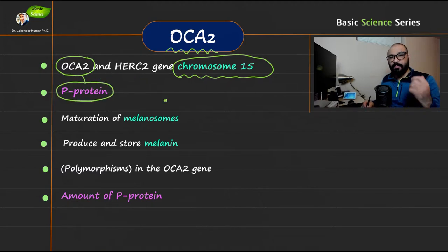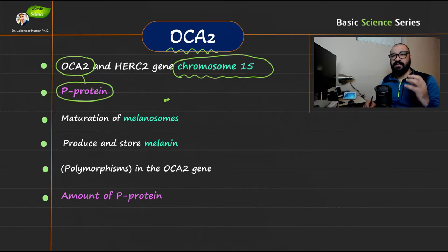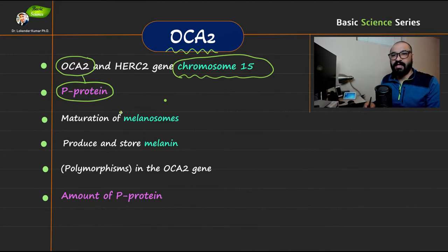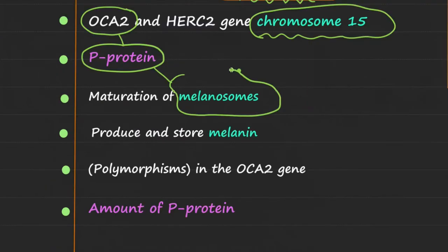The protein — the three-dimensional amino acid structure that is going to be synthesized from this particular gene — is known as p-protein. You need to remember that. The p-protein is responsible for the production of melanosomes.